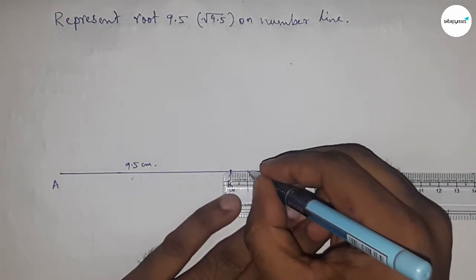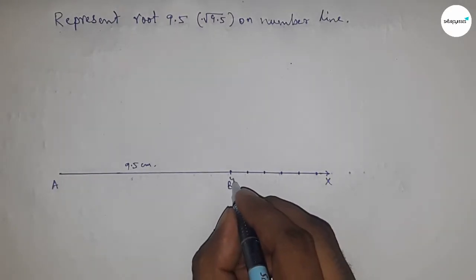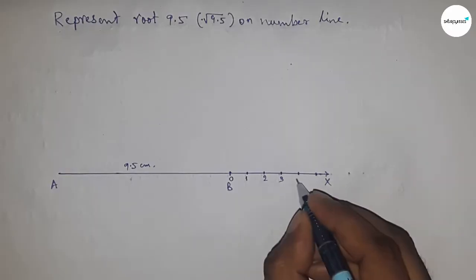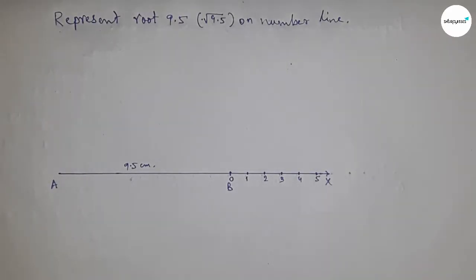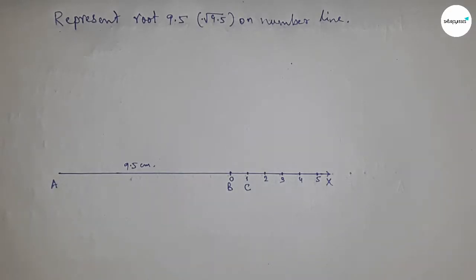Mark numbers on the line from B to X using the scale: 0, 1, 2, 3, 4, 5, and so on. Mark point C. Now I'm going to bisect line AC.